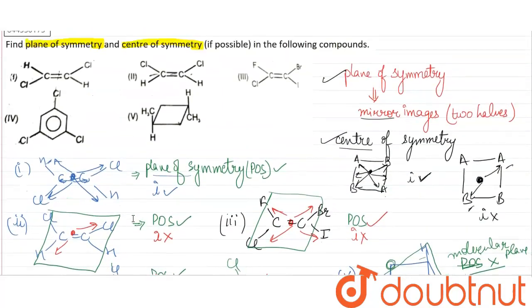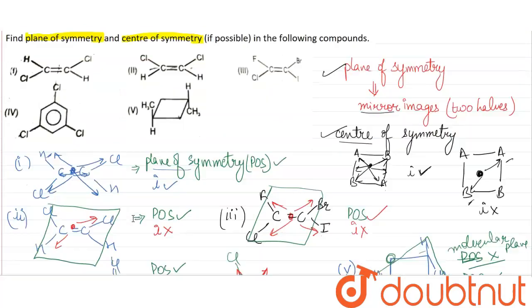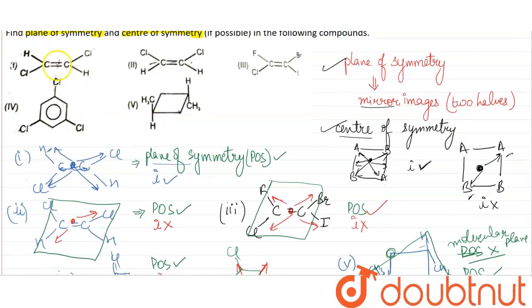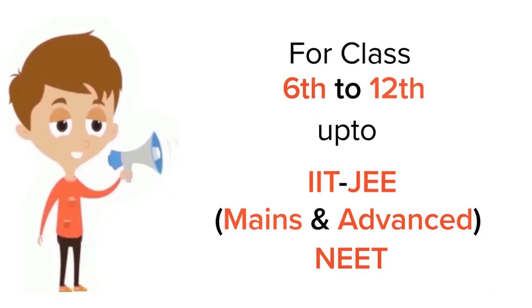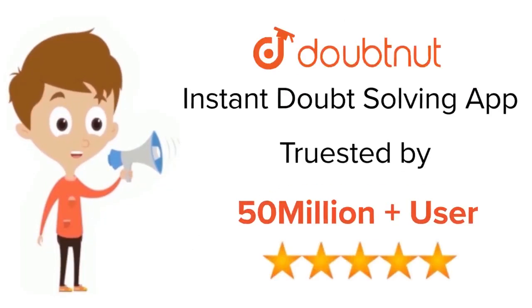Let's summarize: in compound one, both POS and center of symmetry are present. In compound two, only POS is present. In compound three, only POS is present. In compound four, only POS is present. In compound five, both POS and center of symmetry are present. That was the solution — I hope you understood. For class 6 to 12, IIT JEE and NEET level, trusted by more than 5 crore students, download Doubtnut today.